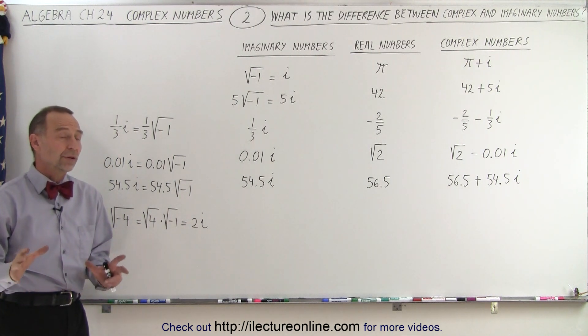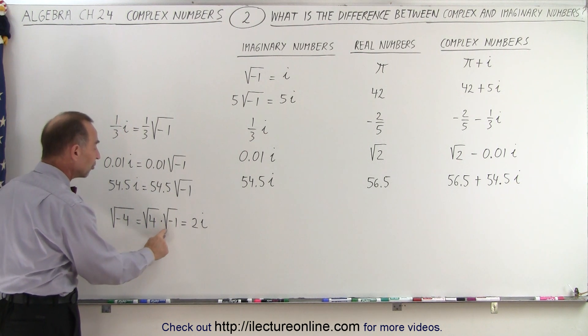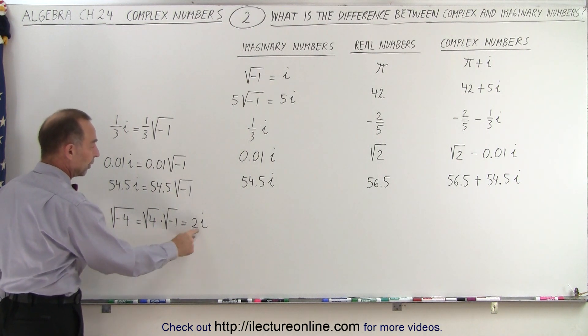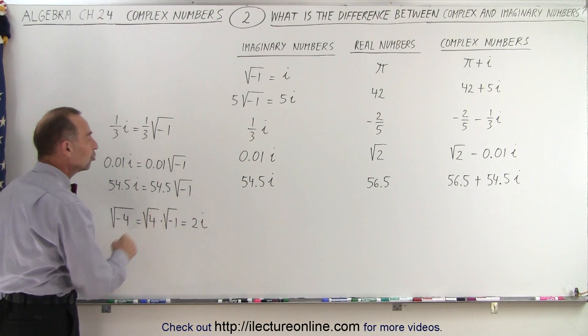Of course, it's not always the square root of negative 1. We could have the square root of negative 4. But then you can see that this can be separated into the square root of 4 times the square root of negative 1. Of course, the square root of negative 1 is i. And the square root of 4 is 2. So that then becomes 2i.